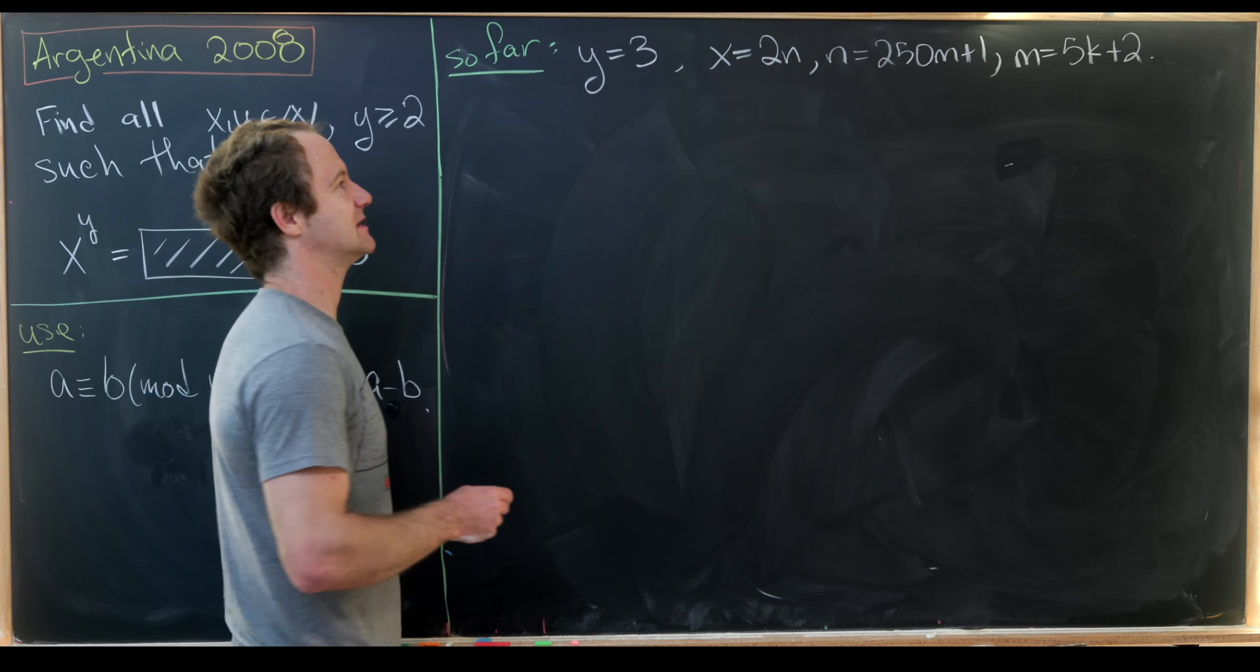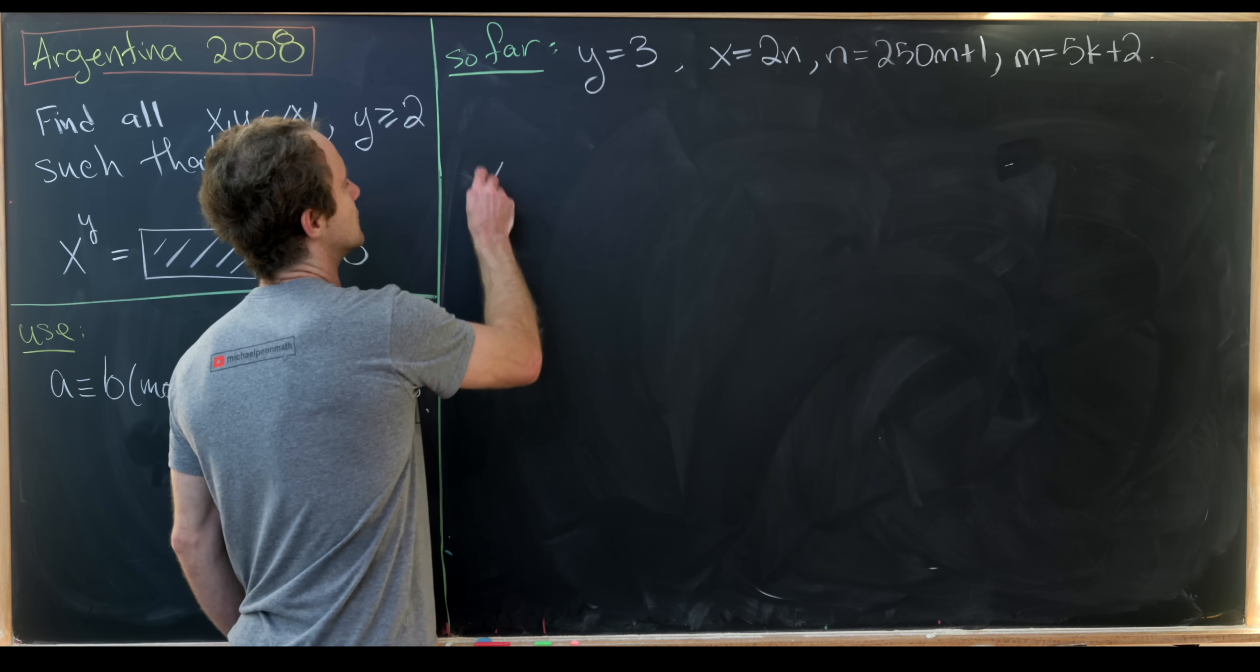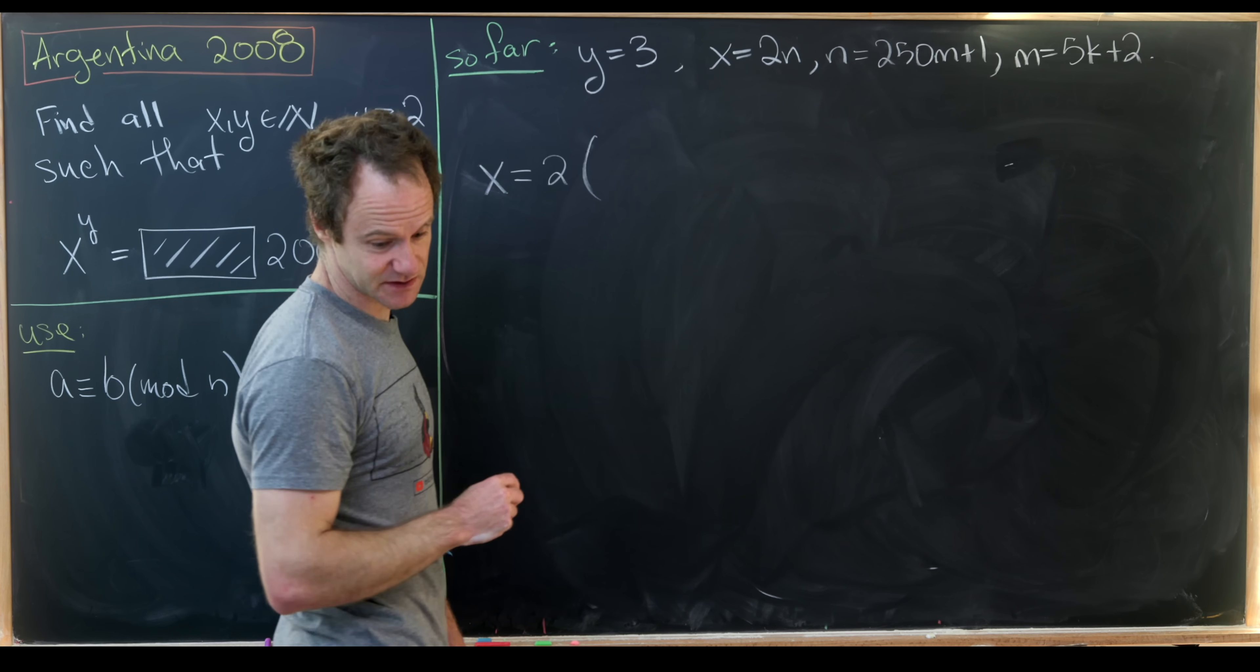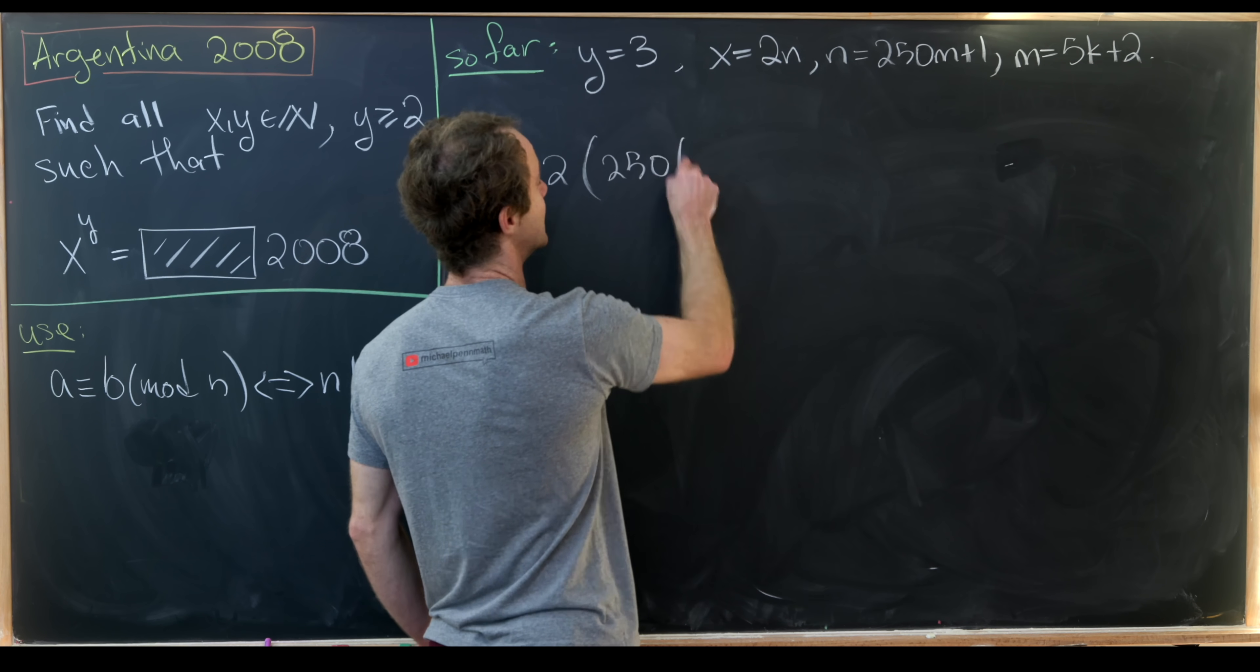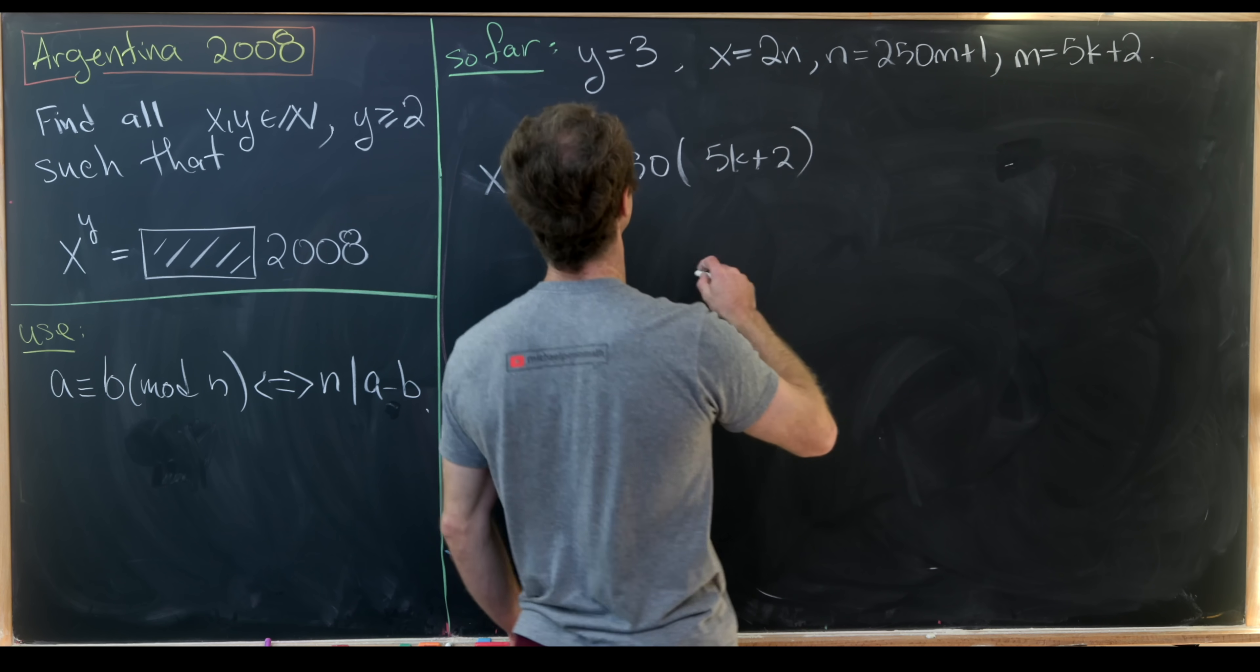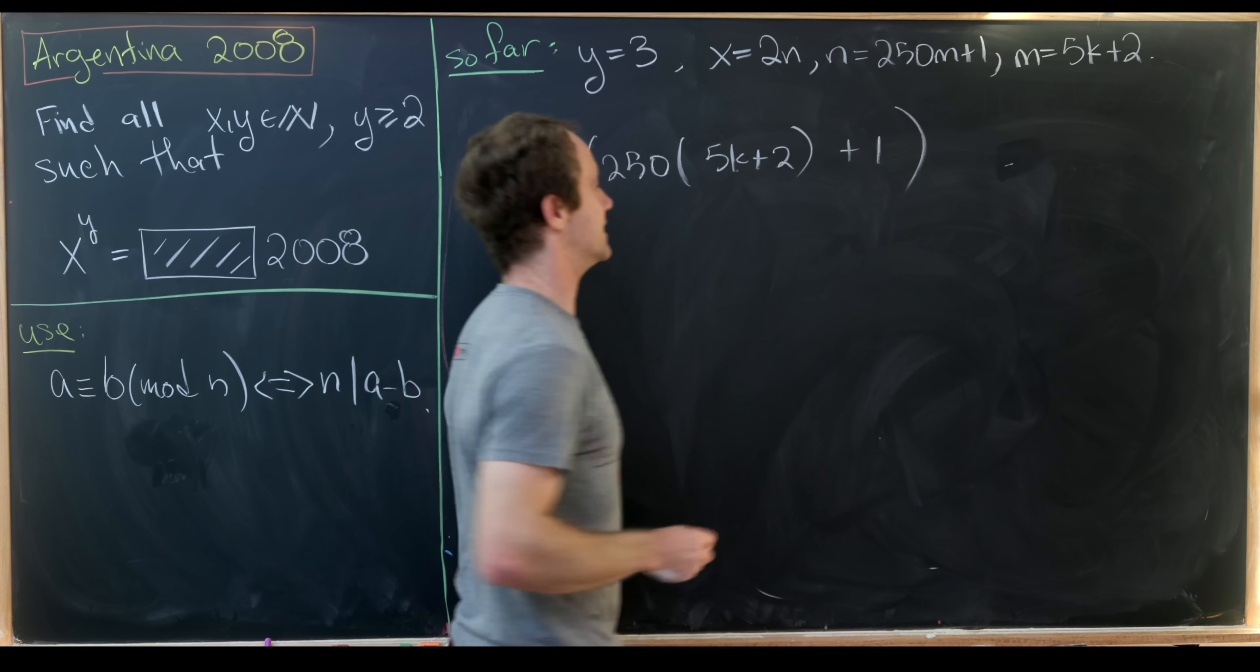So in fact, we'll have infinitely many solutions here. Let's notice that x is equal to 2 times n, which is 250m. But m is 5k plus 2. And then we'll have a plus 1 there.